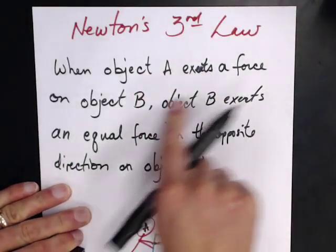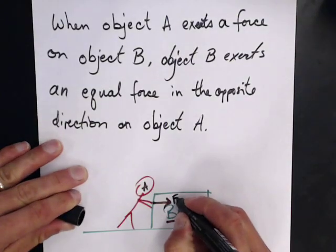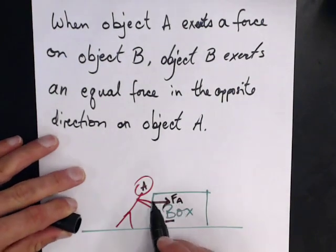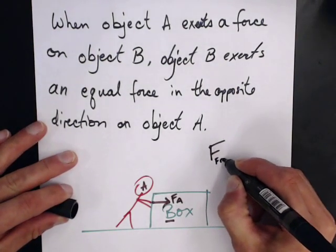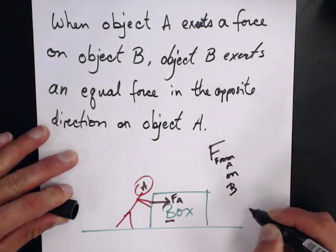So when A exerts a force on object B, here's the force on A. There's F_A, it's on B. This is the force from A on B.